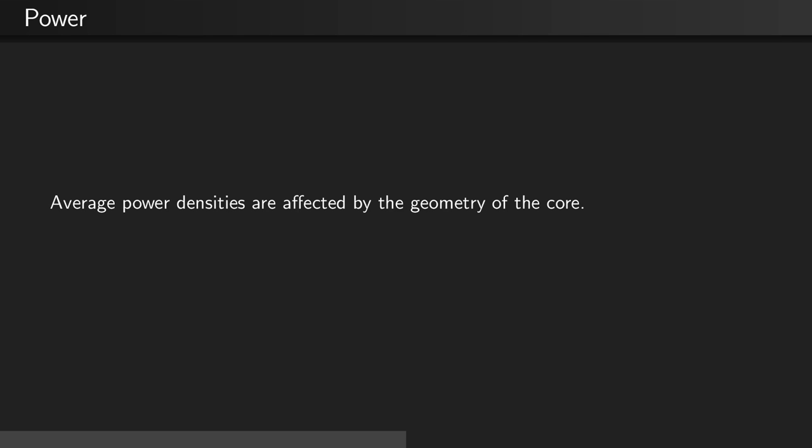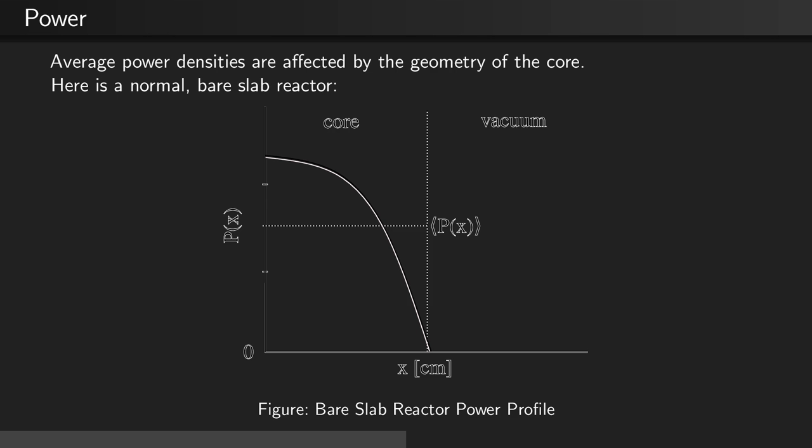Average power densities are affected by the geometry of the core. Let's take a couple of examples. Here we see a normal bare slab reactor with a vacuum region outside. The core average power tends to be somewhere near the middle, about 2 over pi of the maximum value for the power.